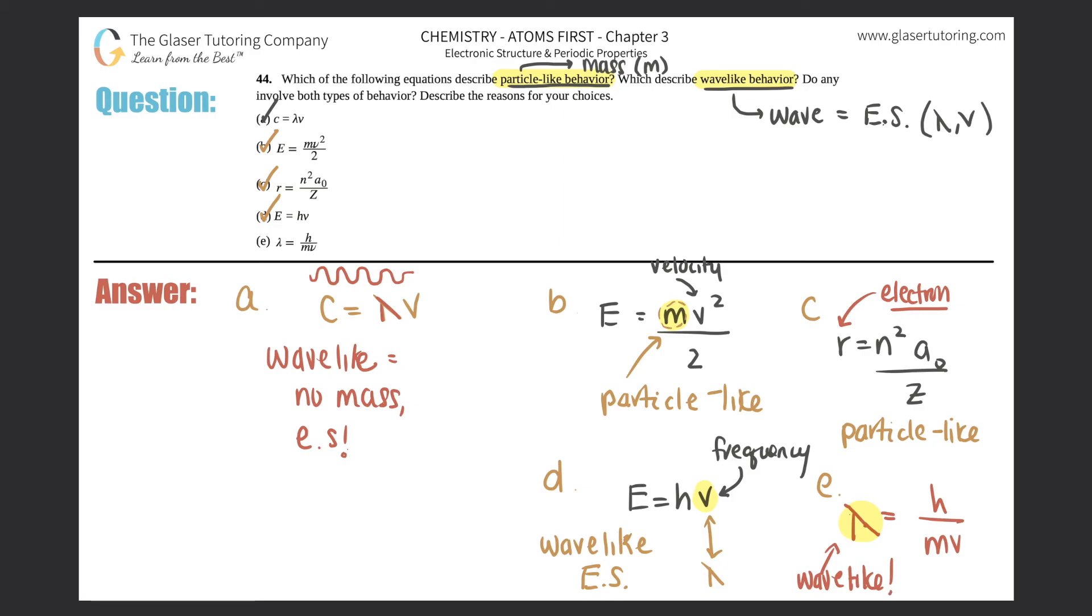But we also have a M in here. And mass is the M. So what do you guys think? Since there's both properties, it's both. So this is the only one that involves both types of behaviors. So E would be wave-like and particle-like.